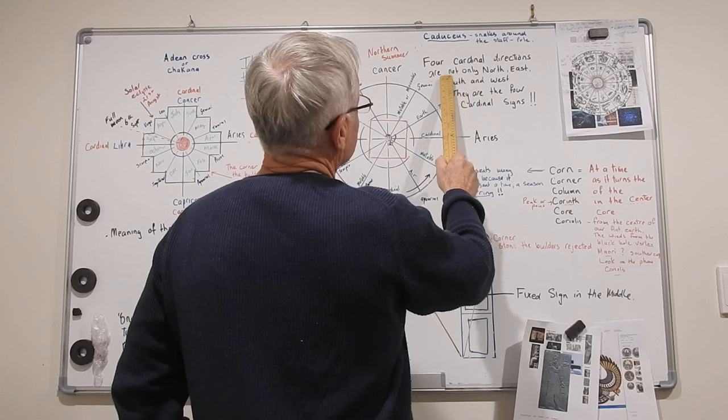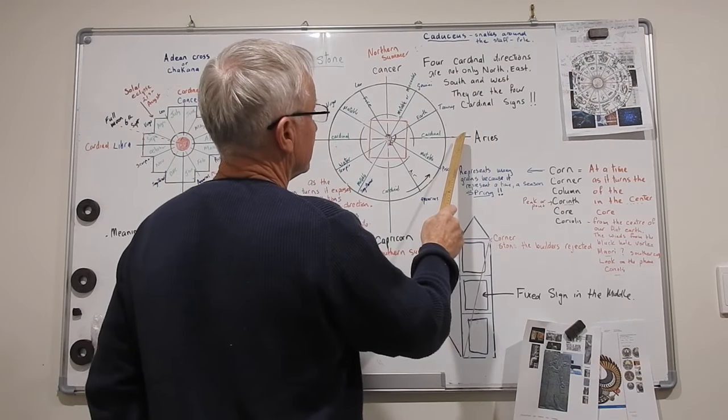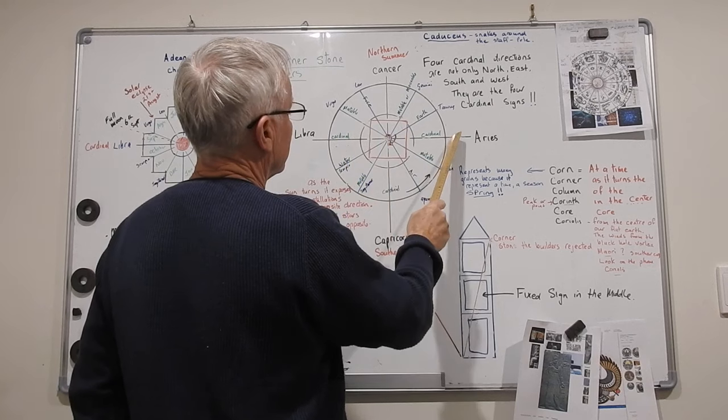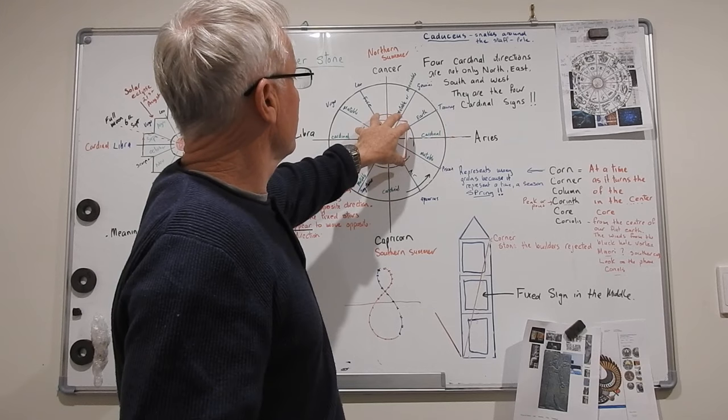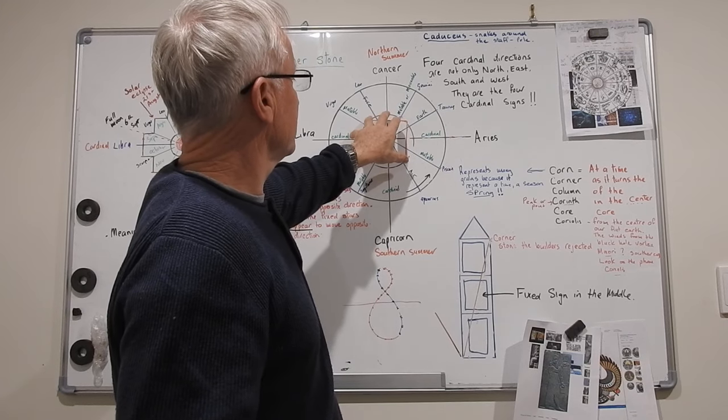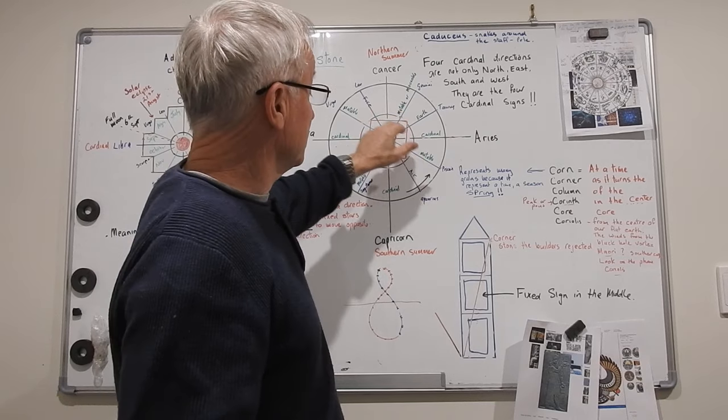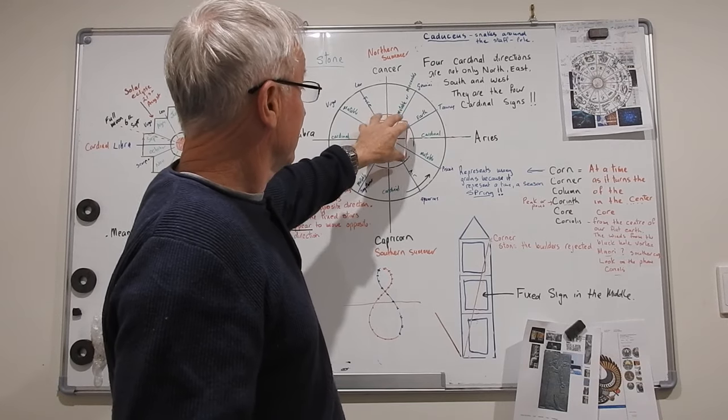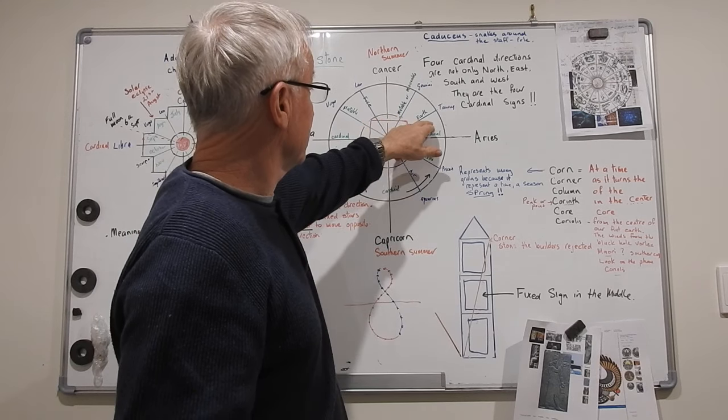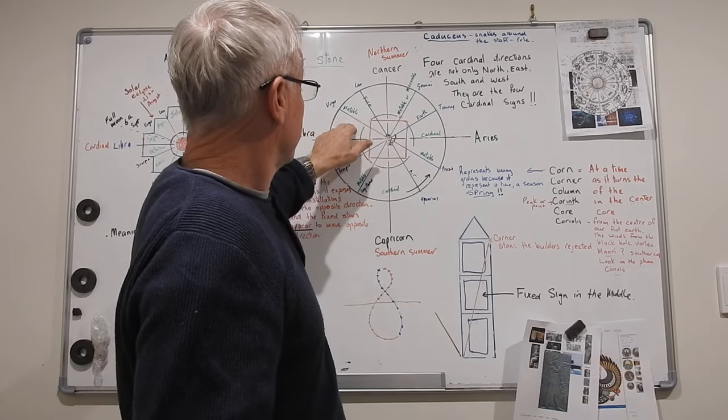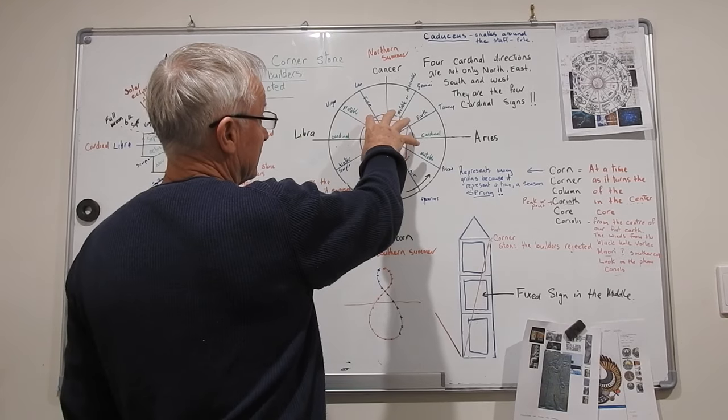The four cardinal directions are not only north, east, south and west. They are the four cardinal signs. I wrote that because the pyramid is slightly tilted anti-clockwise to north. It's not exactly the cardinal signs north, east, south, west. There's something going on there. It's about this, about the zodiacs. We could figure out what was going on, why is it tilted?